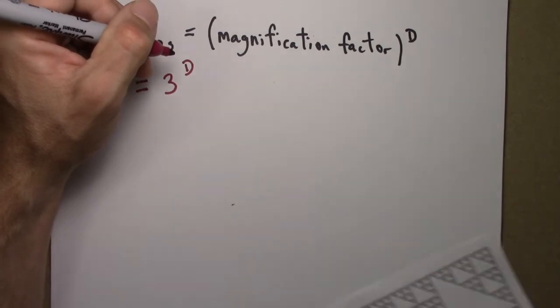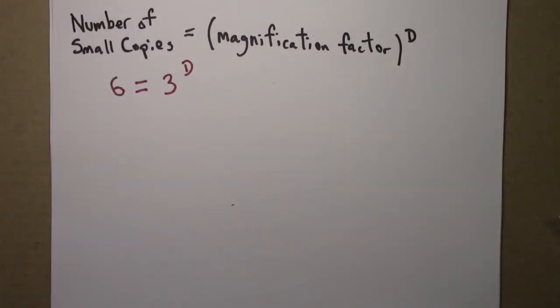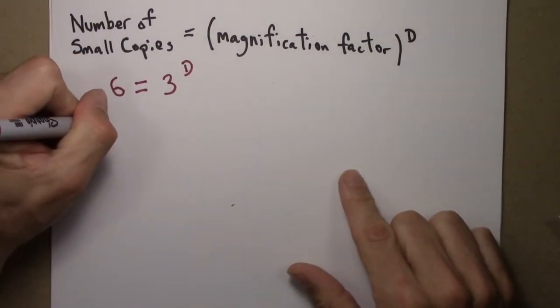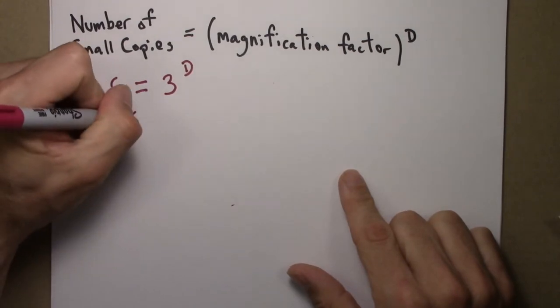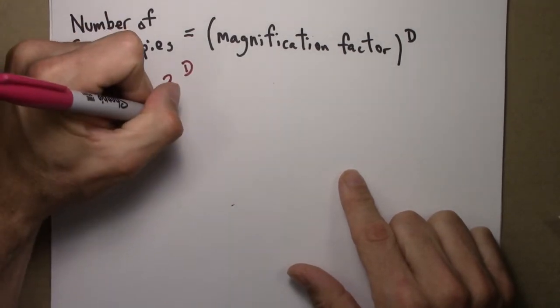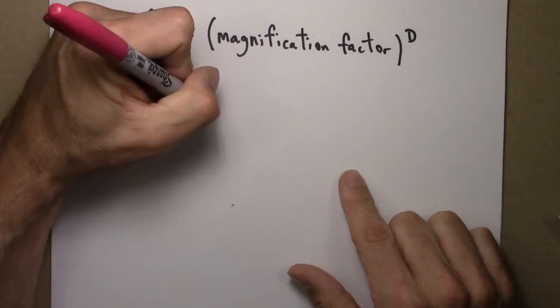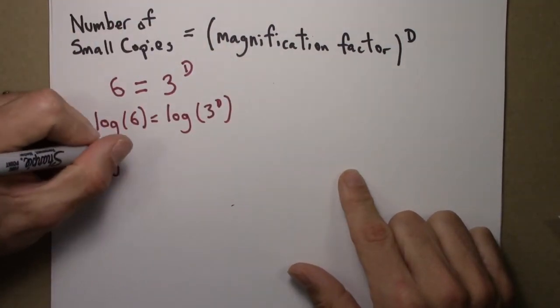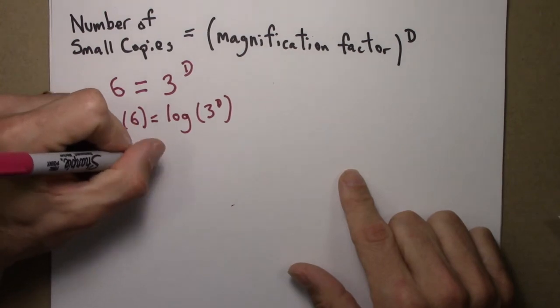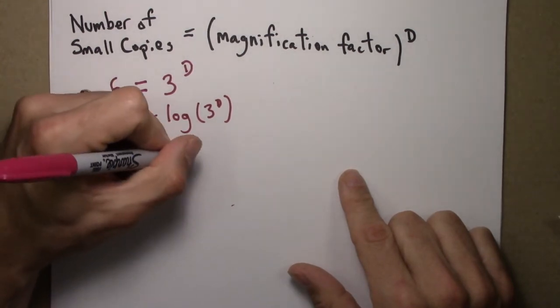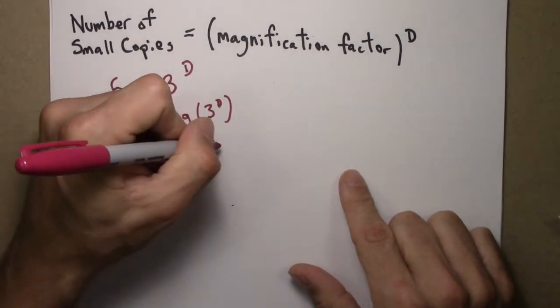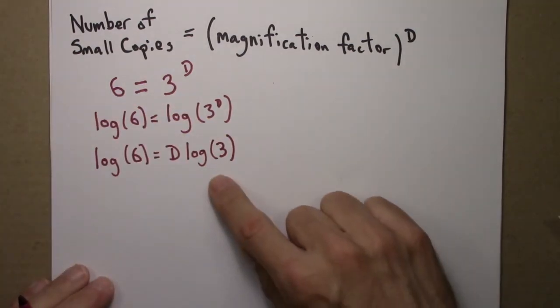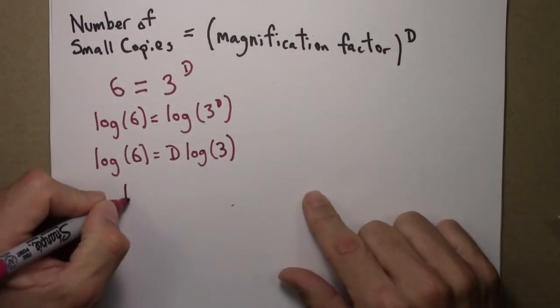And then we need to raise it to the D power. Alright, so let's go to work with logs. Take the log of both sides. Use the exponent property of logs to bring the D outside and downstairs. Then divide both sides by log three, and we're done.